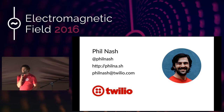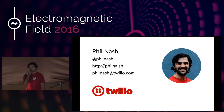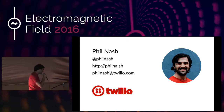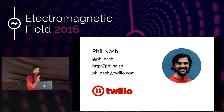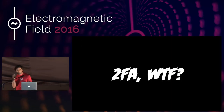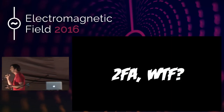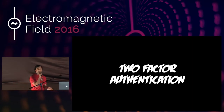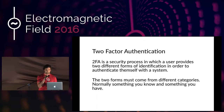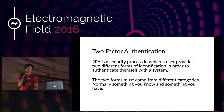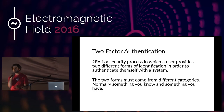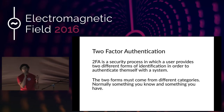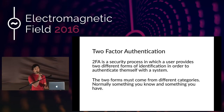But it's not about Twilio right now — we're talking about two-factor authentication, or 2FA. Two-factor authentication is a security process in which a user provides two different forms of identification to authenticate themselves with a system. Those two forms must come from different categories — normally something you know and something you have. A great example we've been using for years is bank cards with a PIN: the card is something you have, and the number is something you know.